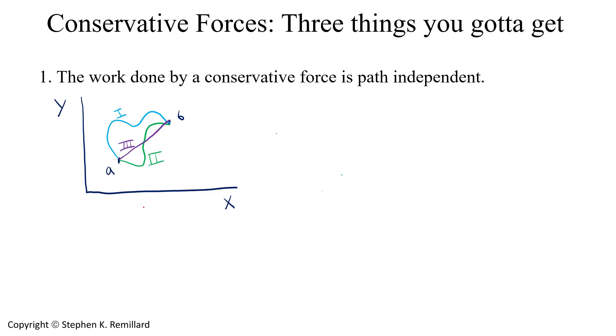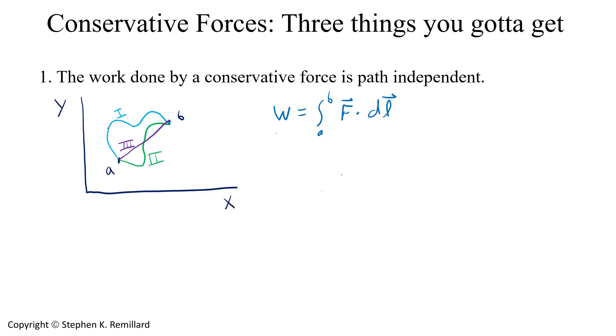The object moves from point A to point B under the influence of some kind of force, and the work done by that force is the integral from A to B of that force dotted the path. DL is an element that follows the path all the way from point A to point B.